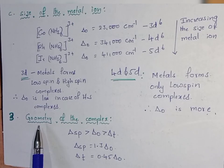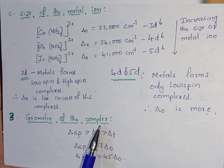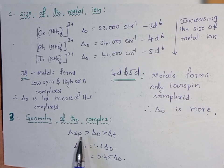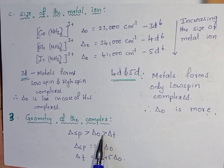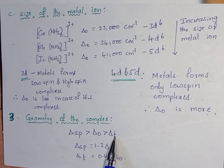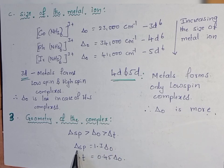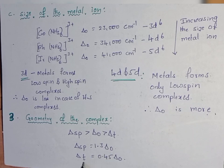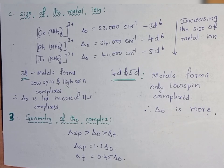The third factor is the geometry of the complex. The crystal field splitting energy in square planar is more than that in octahedral, which is more than that in tetrahedral (delta T). The relations are: delta SP equals 1.3 times delta O, and delta T equals 0.45 times delta O. These are the three factors affecting the crystal field splitting energy of octahedral complexes.